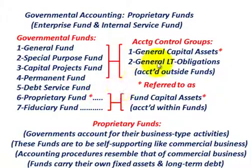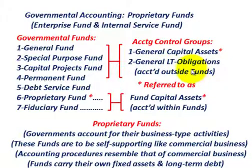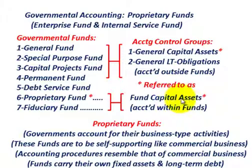Just to make a point here: for these accounting control groups for your long-term assets, your capital assets and long-term obligations, when you're talking about your typical governmental funds, those capital assets and long-term debt and obligations are accounted for outside of the fund groups. When you're talking about your proprietary fund and also the fiduciary fund, those capital assets and any long-term obligations are accounted for within the fund groups themselves.